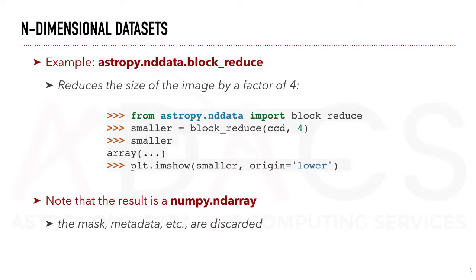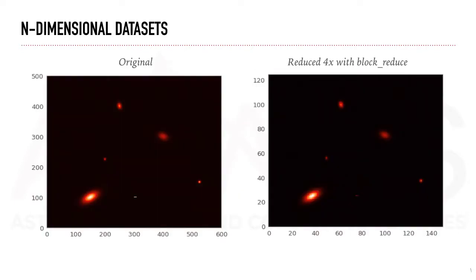Finally, BlockReduce reduces the image size by a factor of n. So say we want to have an image reduced 4 times, we will use block_reduce with factor 4, which will provide us with a smaller image. So here is the result of an image reduced 4 times.